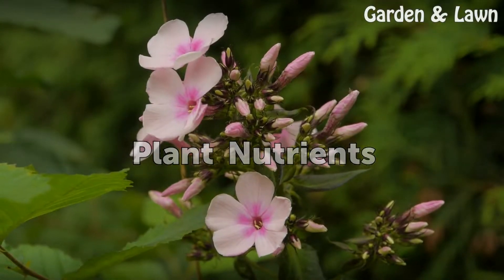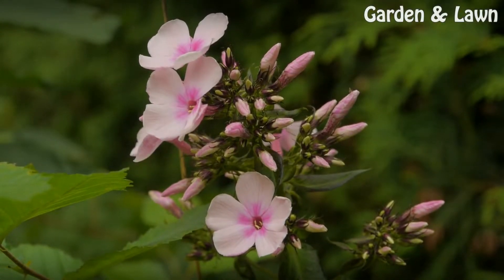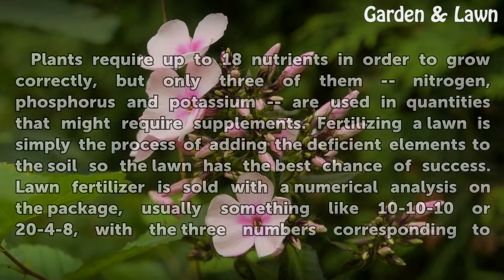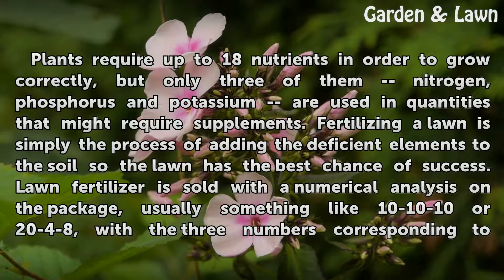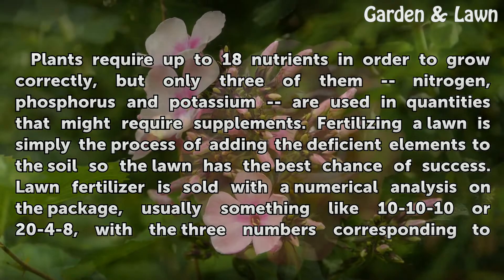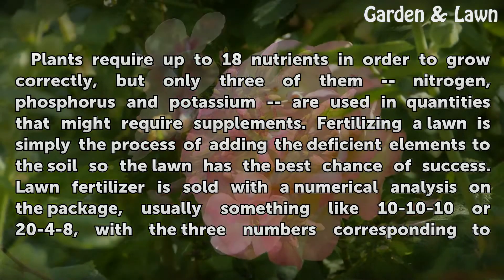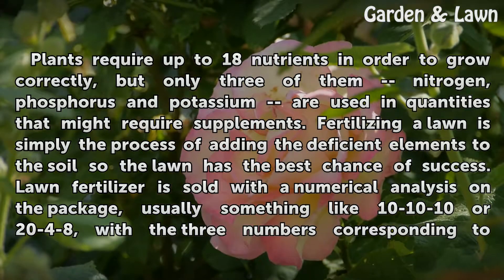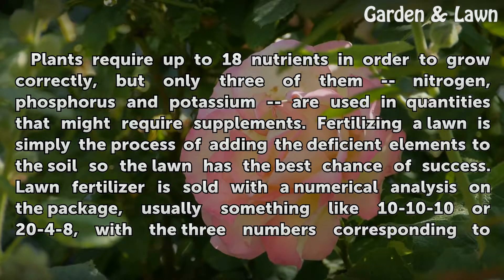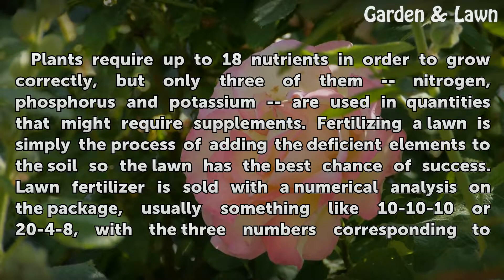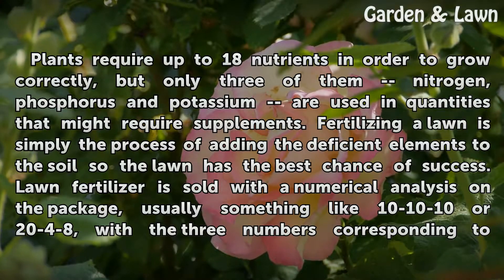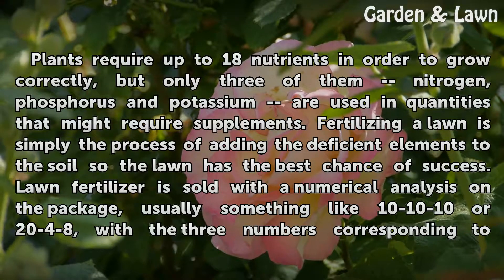Plants require up to 18 nutrients in order to grow correctly, but only three of them — nitrogen, phosphorus, and potassium — are used in quantities that might require supplements. Fertilizing a lawn is simply the process of adding the deficient elements to the soil so the lawn has the best chance of success.